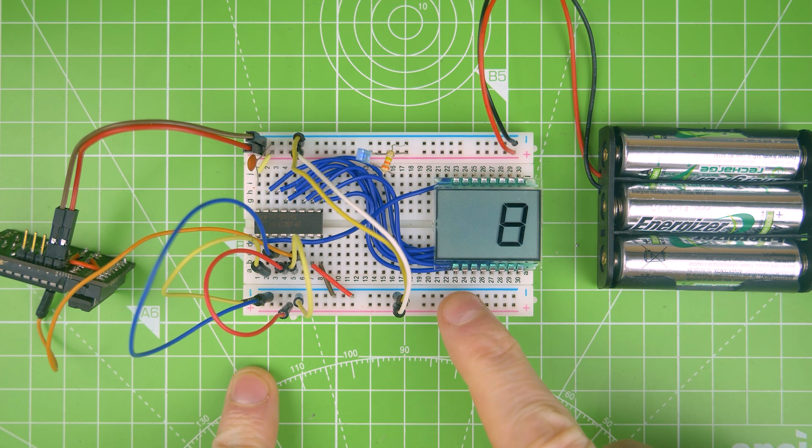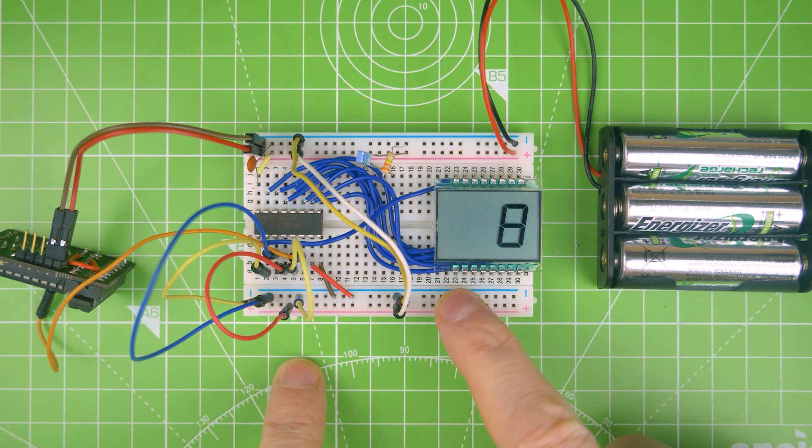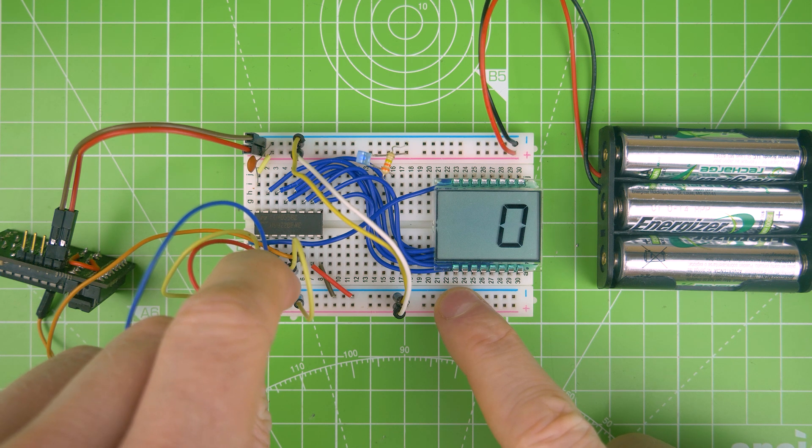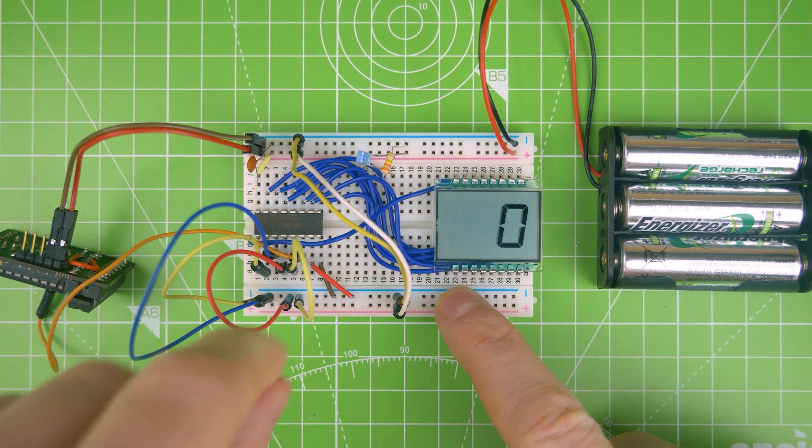So we can manually change our display. We've got our input pins just down here. So I can simply change the first one to a 0 or a negative. So we get a 0. So if all of them are negative, then we get a 0. Let's make it a 1. So we can go through and change all of these manually.